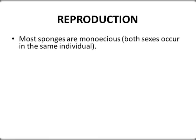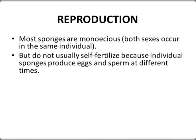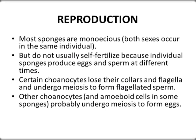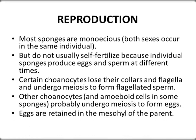Now we'll talk about reproduction. Most sponges are monoecious, meaning both sexes occur in the same individual. However, they do not usually self-fertilize because individual sponges produce eggs and sperm at different times. Certain choanocytes lose their collars and flagella and undergo meiosis to form flagellated sperm cells. Other choanocytes and amoebocyte cells in some sponges probably undergo meiosis to form egg cells. The eggs are retained in the mesohyl of the parent.